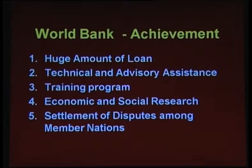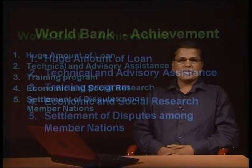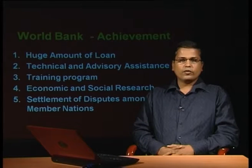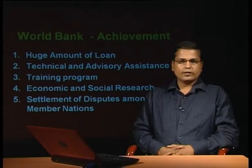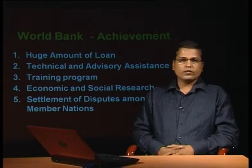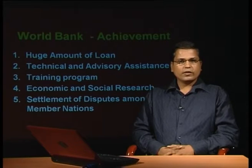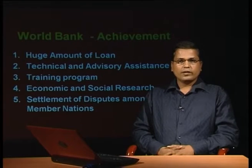World Bank has issued very high amounts of loans to member nations. Most of the loans have gone to transportation, power, and other activities. Approximately 30 percent has gone to transportation, another 30 percent to the power sector, and the remaining 40 percent to agriculture, forestry, fishery, health, and population control. Seventy percent of loans have been given to developing countries or least developed countries.